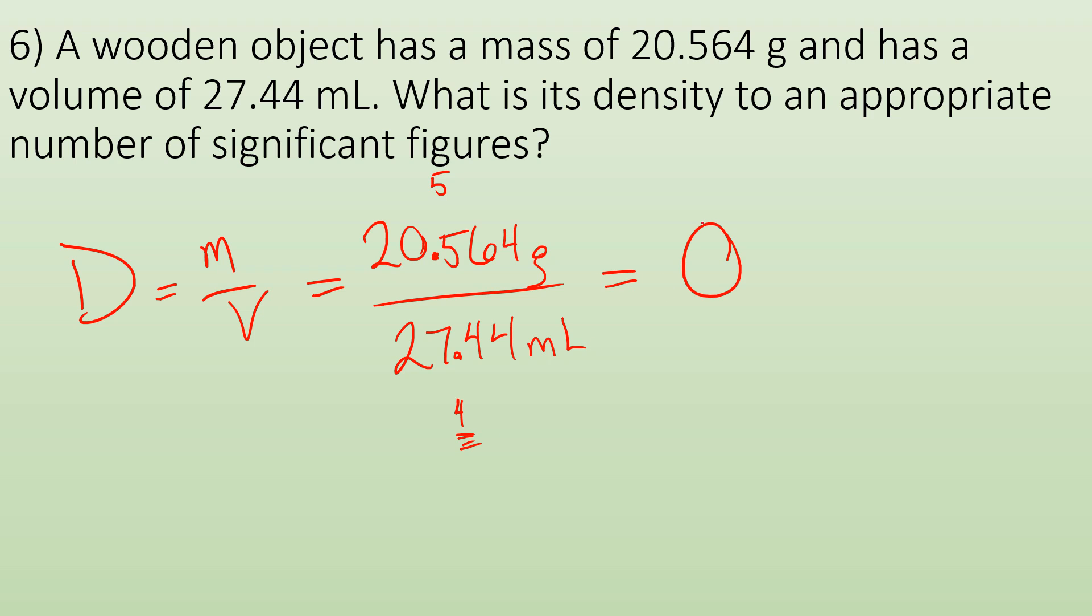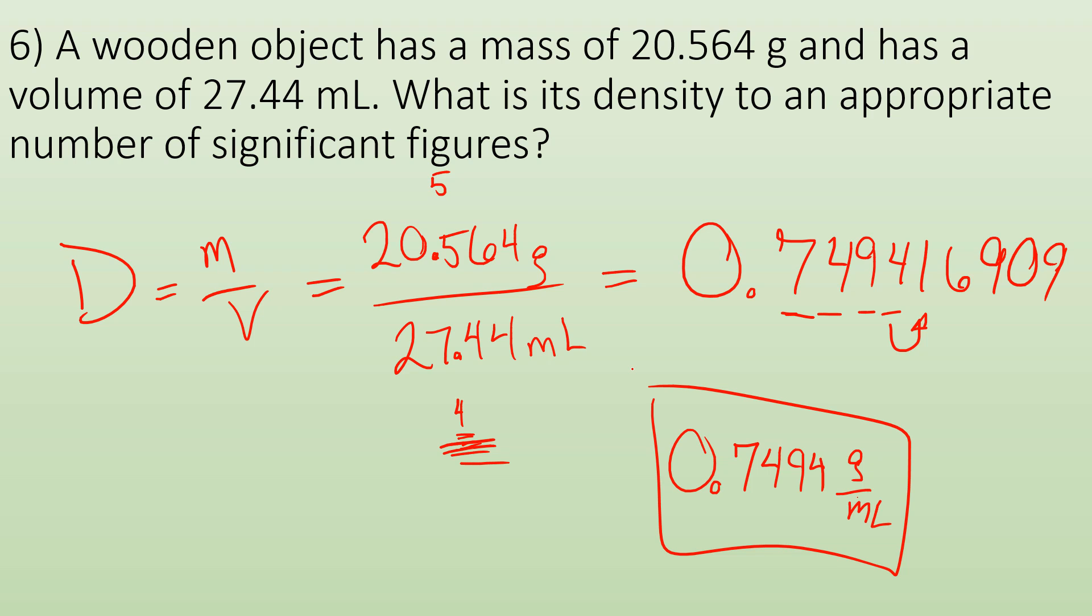So your calculator, which is a liar, it's going to tell you 0.749416909. But it's lying to you because we can only be sure of four numbers. So we start from the first non-zero and we count one, two, three, four. Look to see what's next to it to see how you're going to round. And it's going to round to 0.7494 grams per milliliter as your final answer. So yeah, that's how you do that.